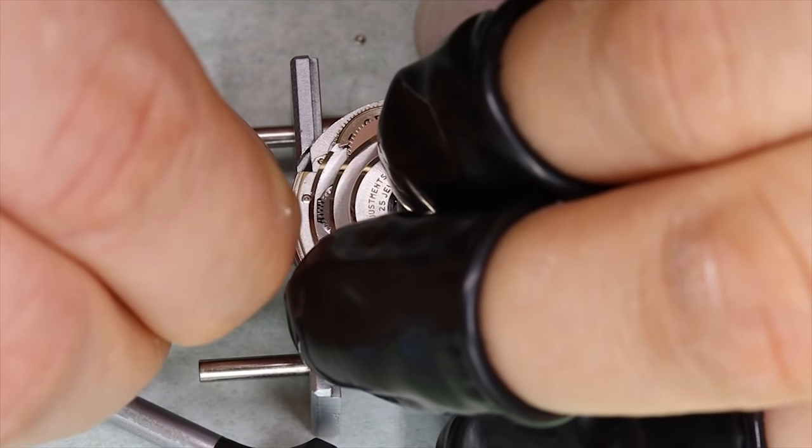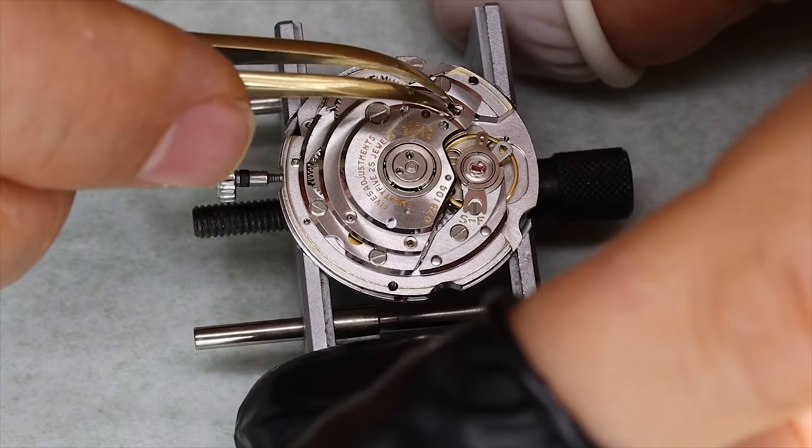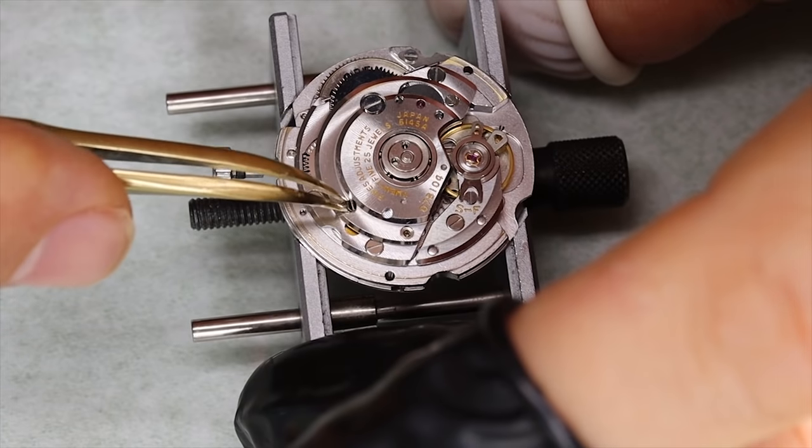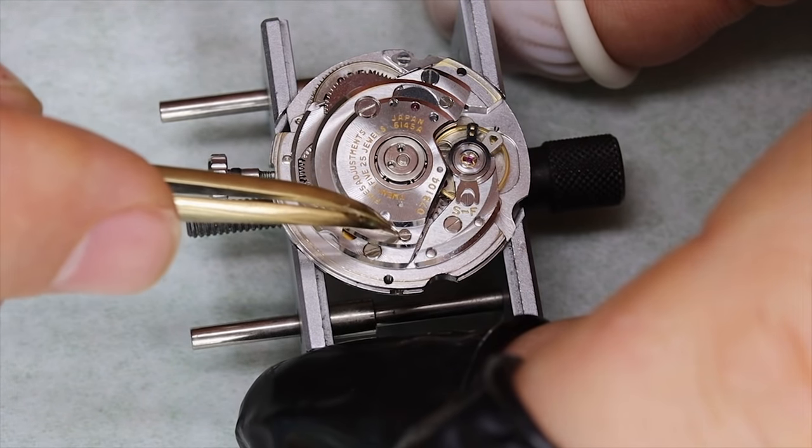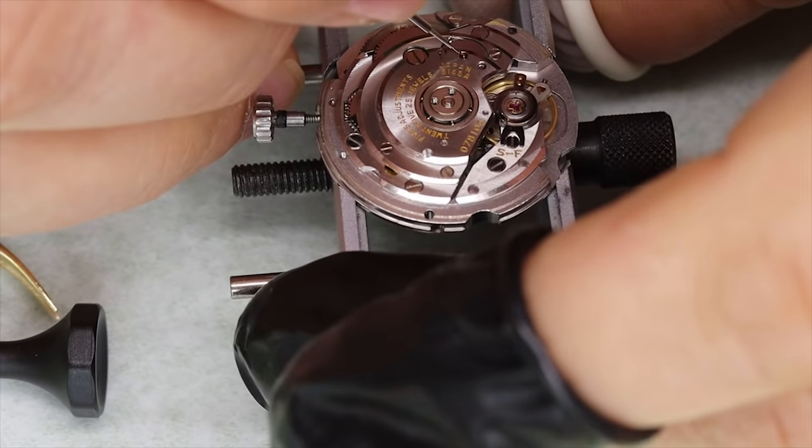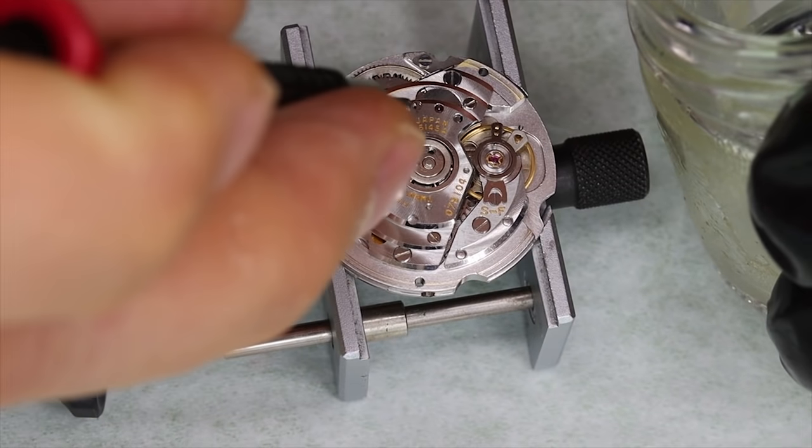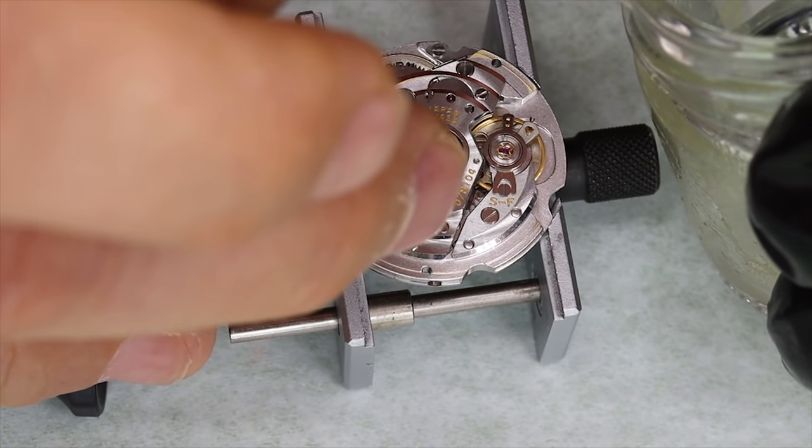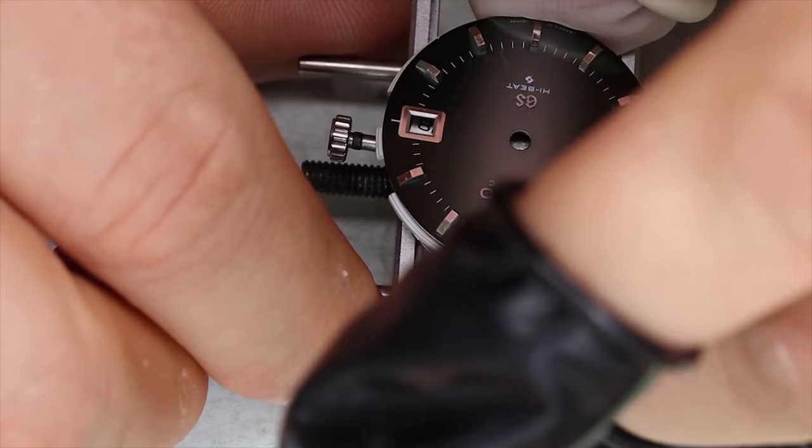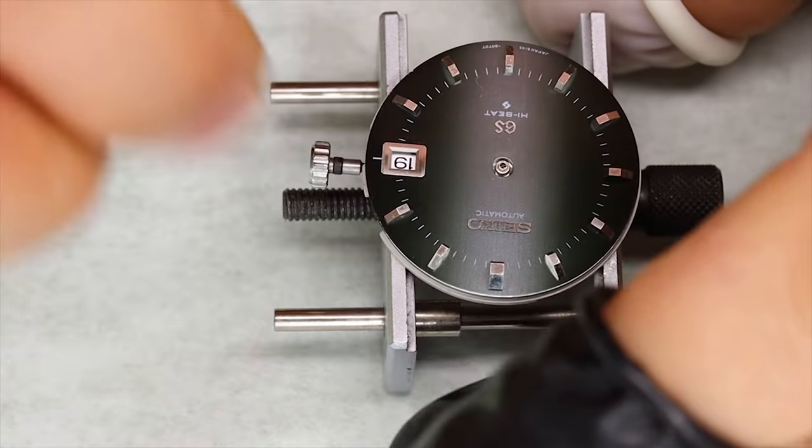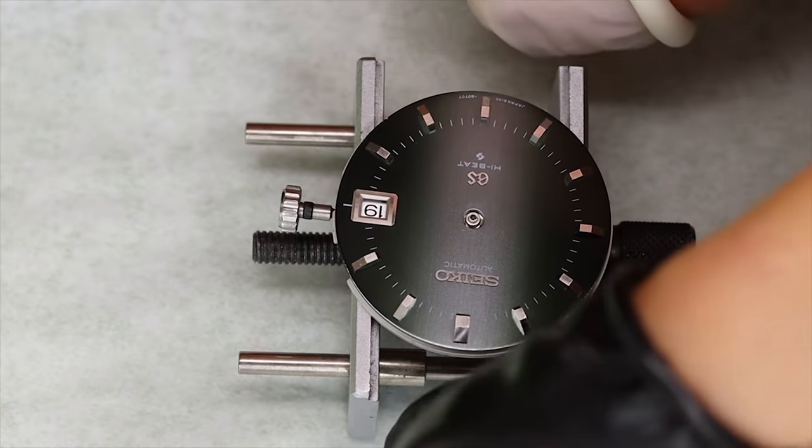Now for those of you who have seen the other Seiko video I did, I bashed Seiko quite a bit for the finish. But looking at this movement, it's a beautiful movement, it's good finish. The Japanese have a different philosophy there than the Swiss. But I think this movement absolutely looks high quality. We're putting some Lubeta V106 in the ball bearing for the rotor. And then we can put this fabulous dial back on.